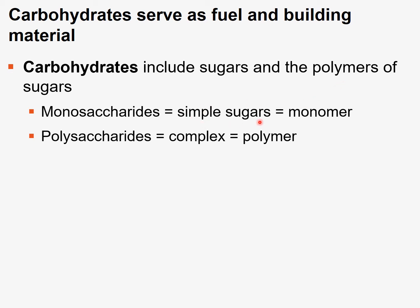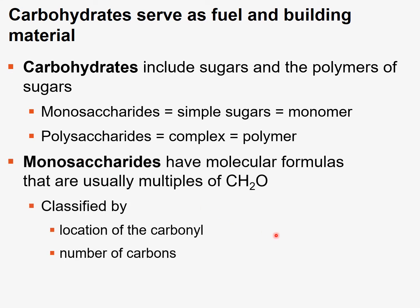For carbohydrates, the simple sugars or monomers are called monosaccharides. The complex polymers, which include many repeating units of various sugars — sometimes the same sugar — are called polysaccharides. Monosaccharides have unique molecular formulas that are usually in multiples of CH₂O, so the ratio of carbon to hydrogen to oxygen is going to be a 1 to 2 to 1 ratio.